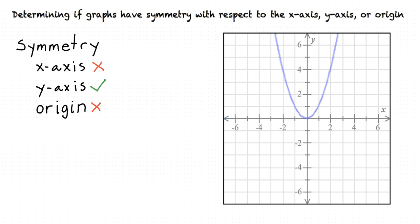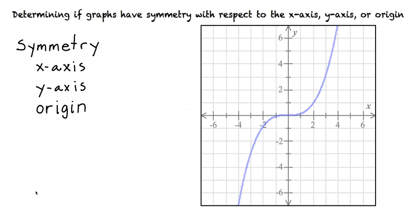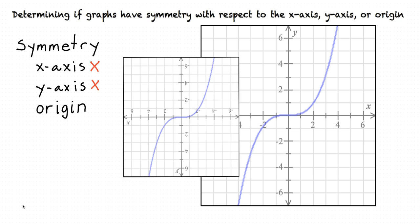Can I see a graph that does have symmetry with respect to the origin? Sure. Here's a graph that doesn't have symmetry with respect to the x-axis or the y-axis, but if we rotate it 180 degrees, it looks the same. Exactly — we rotated it 180 degrees and it looks the same, meaning it does have symmetry with respect to the origin.